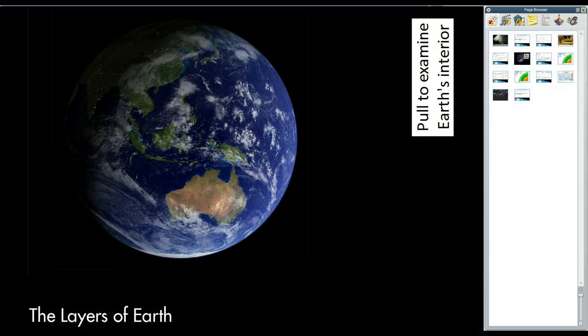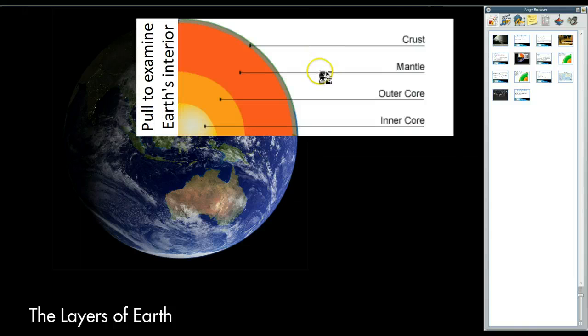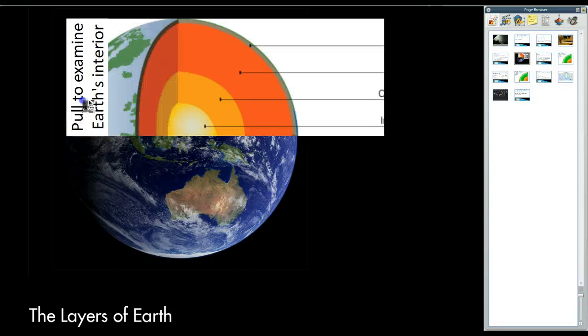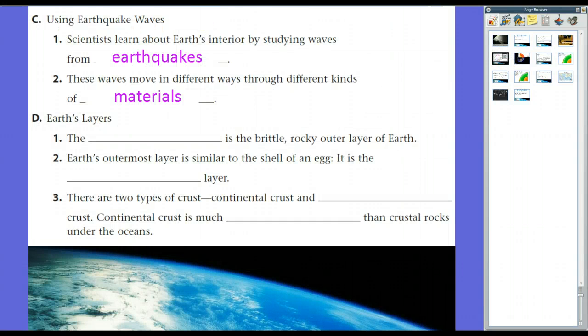And of course, we know that the Earth's outermost area is the crust. Below this is the mantle, and then the outer core and the inner core. So you can see this is a cross-section of the Earth. So let's go ahead and let's go back to our notes and talk about the crust. The crust is the brittle, rocky outer layer of the Earth. The Earth's outermost layer is similar to the shell of an egg. So not only is it brittle, but it's also thin. It's, in fact, the thinnest layer of the Earth. It's only about 35 kilometers deep, or 35,000 meters.